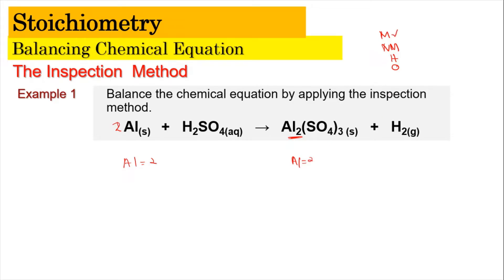Now the non-metal. The non-metal here is sulfur, because it is different from hydrogen and oxygen. On the product side, sulfur is in brackets — Al2(SO4)3 — so S times 3 gives three atoms of sulfur. But on the left-hand side, H2SO4 has only one sulfur. You cannot write S3 because that changes the formula; you can only change the coefficient. So we put 3 in front of H2SO4, giving us three sulfur on the left-hand side as well.